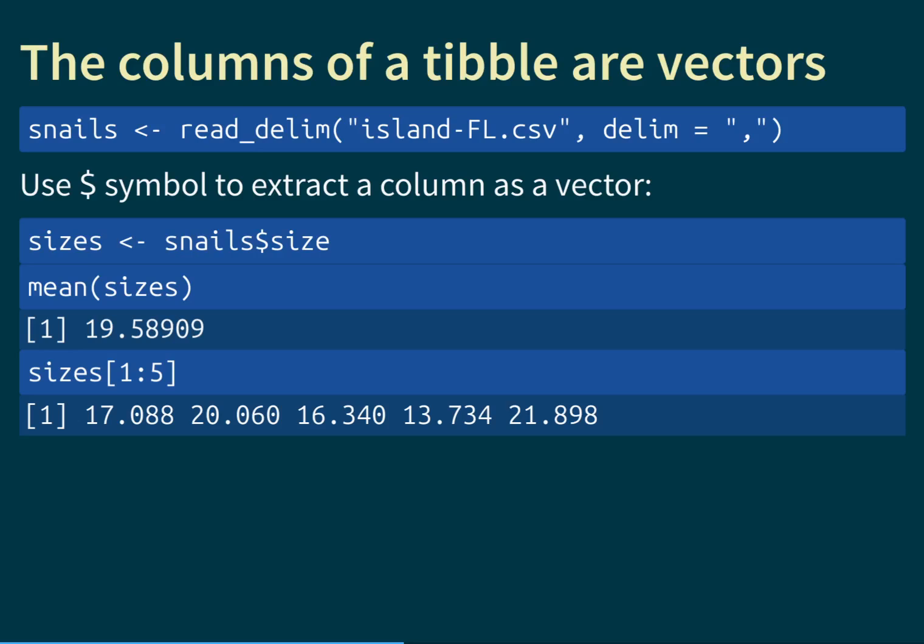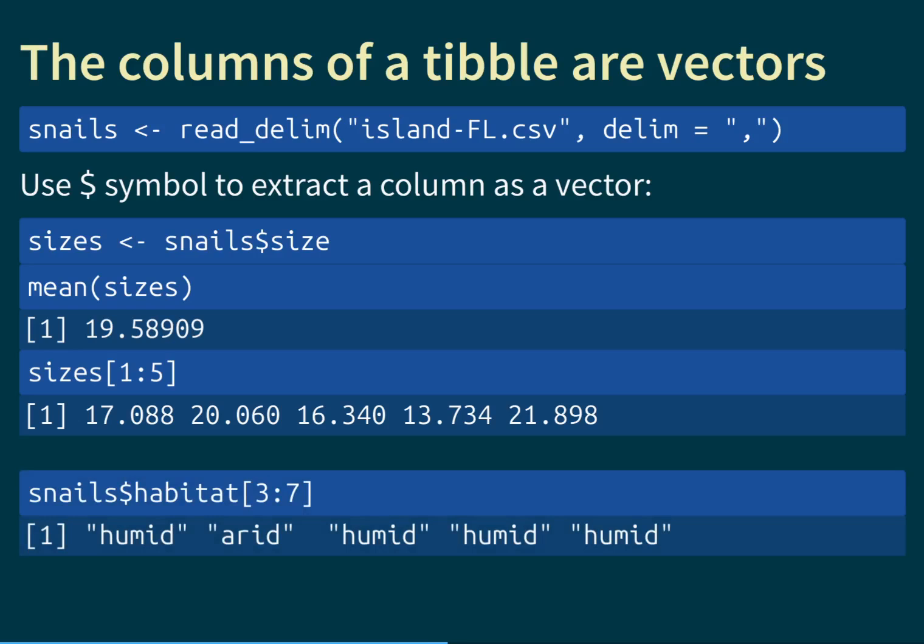You can do the same with other columns. For example, snails$habitat extracts the habitat column as a vector. If we want to access the third to seventh entries, we use bracket notation — snails$habitat[3:7] — and the output shows a combination of humid and arid zones, which are the two available habitats. It is perfectly legal to use bracket notation directly after a more complex expression like snails$habitat without first assigning it to another variable.